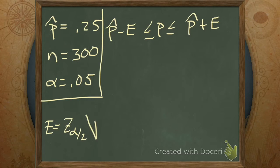But you're like, what is the margin of error? Some people say ME. So the margin of error is z alpha over 2 times the square root of p hat times q hat divided by n.